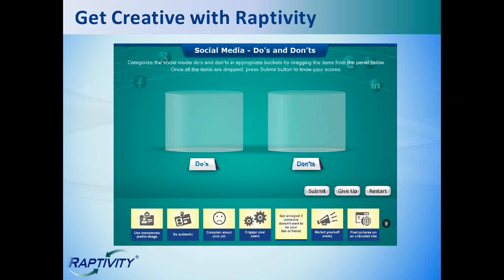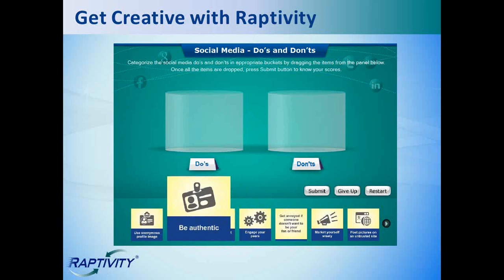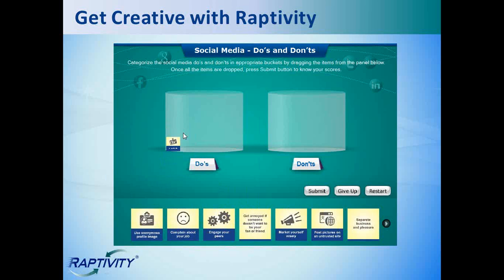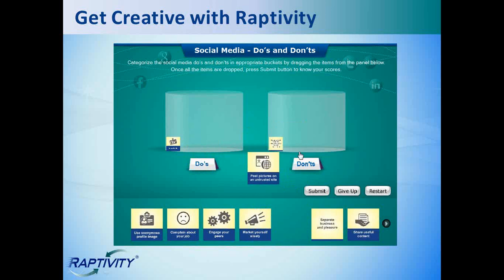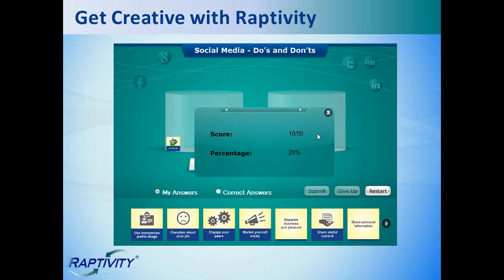And now this interaction can be used in many ways and for endless topics. But the general setup is having a group of words, images, or a combination of both, and then classifying or identifying them correctly. So first up we have social media do's and don'ts. So we're just simply going to drag and drop these into the appropriate categories. And once we've done that, we can select submit and we'll immediately get a score and a percentage. Also you have the option of comparing the answers you gave with the correct answers.